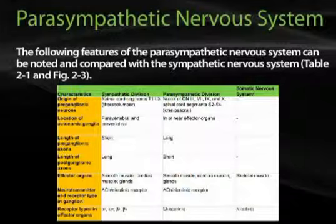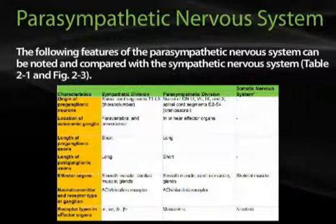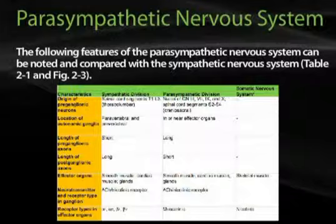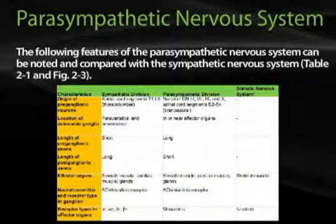The preganglionic neurotransmitter type and receptor are the same in the sympathetic and parasympathetic divisions. They both use acetylcholine and nicotinic receptors, whereas at the effector organs in the sympathetic division you find alpha-1, alpha-2, beta-1, and beta-2 receptors. In the parasympathetic division, we have primarily muscarinic cholinergic receptors, and in the somatic nervous system, we have nicotinic cholinergic receptors.